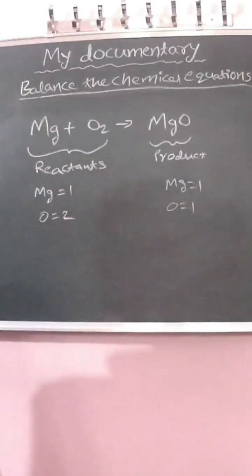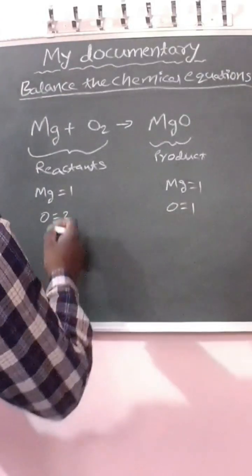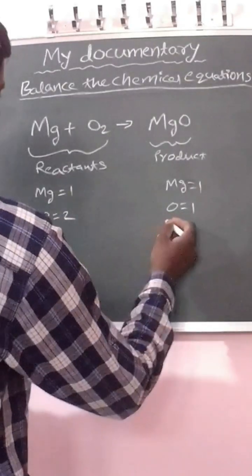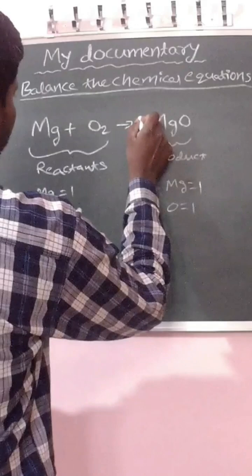So the number of atoms are not balanced on both sides. In this equation, we need to balance the oxygen atoms. To do this, we need to put a coefficient of 2 in front of MgO.